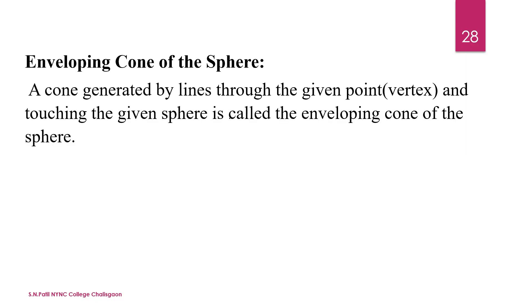What is an Enveloping Cone? A cone generated by lines through a given point called the vertex, and touching a given sphere, is called the Enveloping Cone of the sphere. This is the vertex, these are the generators, and each generator touches the sphere. The axis passes through the center of that sphere.